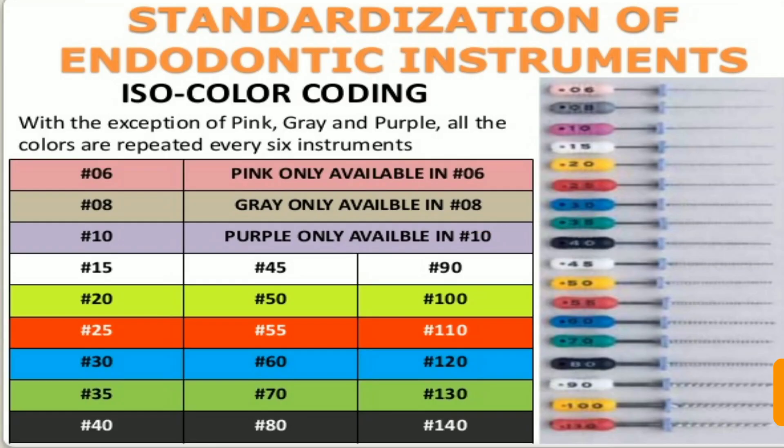You need to remember that endodontic files are available in sizes 6 to 140. From 10 to 60, they are in increments of 5 — that is 10, 15, 20, and so on. From 60 onwards, they are in increments of 10, so there is no size 65; from 60 it goes 70, 80, 90, and so on.